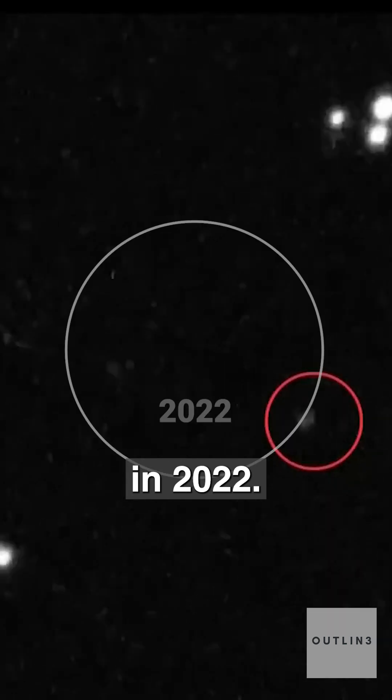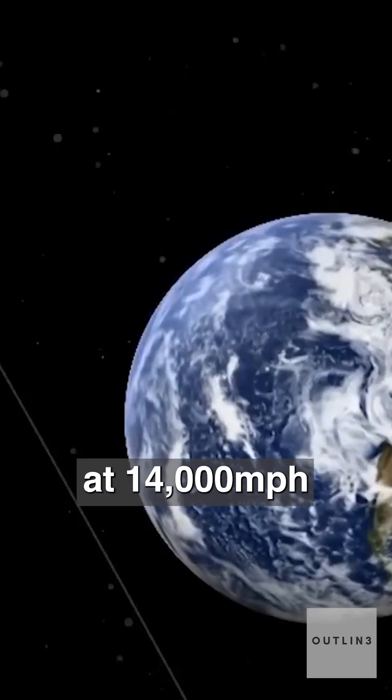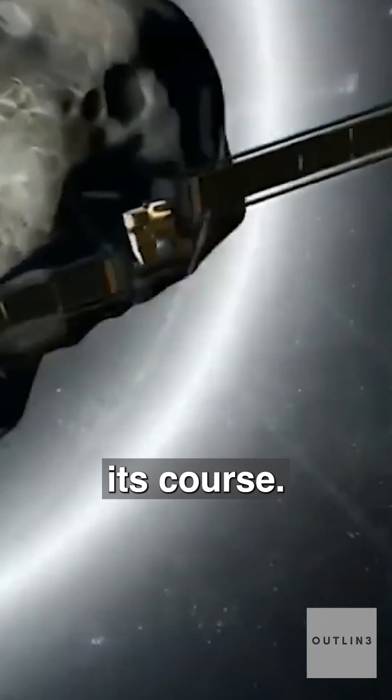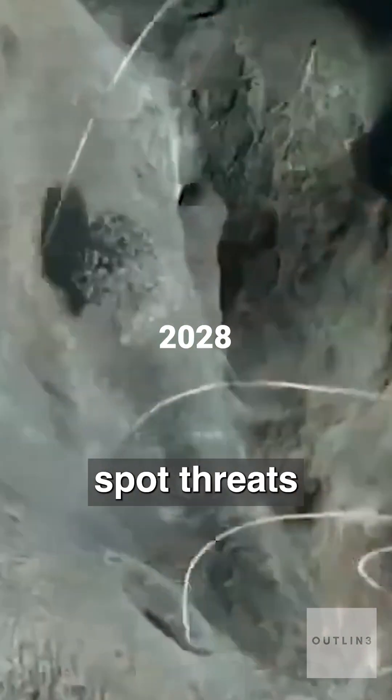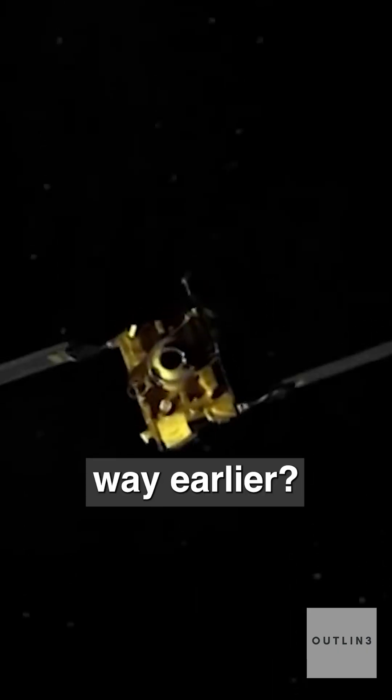In 2022, NASA slammed a spacecraft into an asteroid at 14,000 miles per hour and successfully changed its course. And in 2028, they're launching a telescope designed to spot threats like YR4 way earlier.